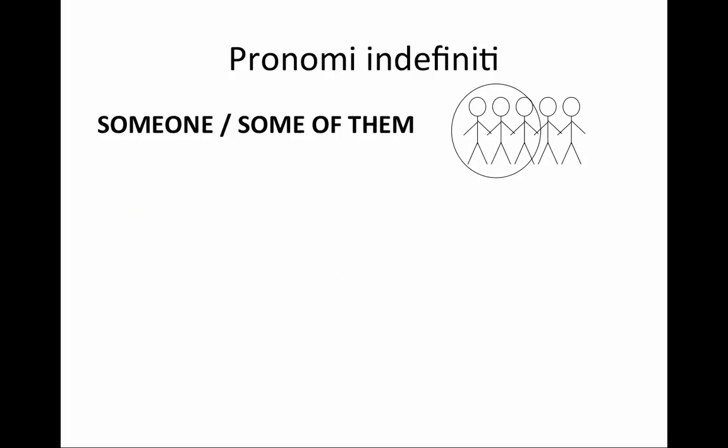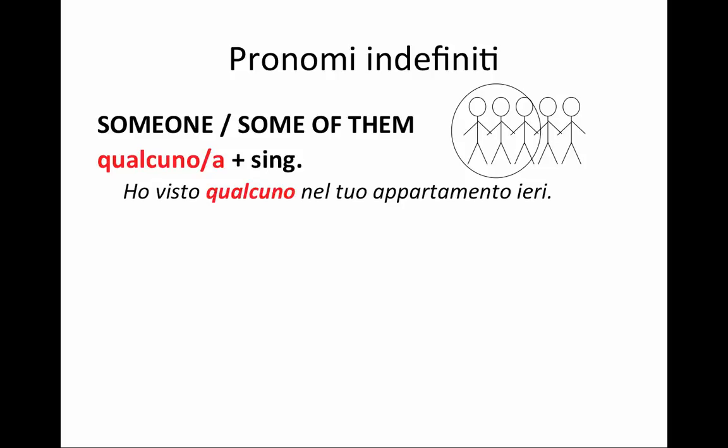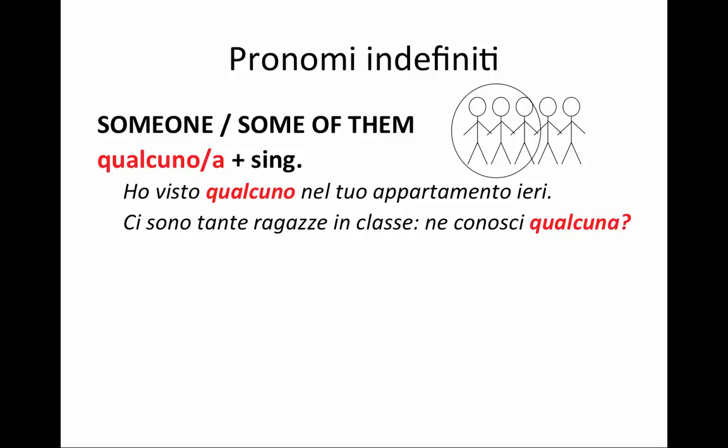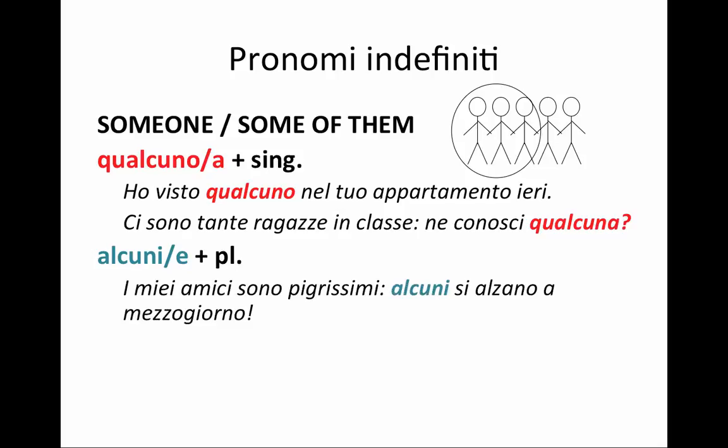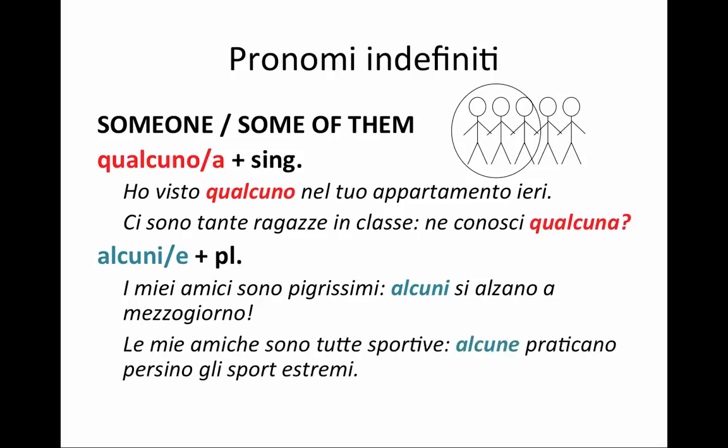This indicates some part of a group — someone or some of them. Qualcuno with singular: 'ho visto qualcuno nel tuo appartamento' — I saw someone in your apartment. Or 'ci sono tante ragazze in classe. Ne conosci qualcuna?' — here I use the feminine qualcuna because I'm referring back to these girls. Or I can use alcuni/alcune with plural: 'i miei amici sono pigrissimi. Alcuni si alzano a mezzogiorno.' 'Le mie amiche — alcune praticano persino gli sport estremi.' Alcune is feminine referring to amiche; alcuni is masculine referring to amici. No difference in meaning, but one is singular and one is plural, so they require singular or plural verbs accordingly.